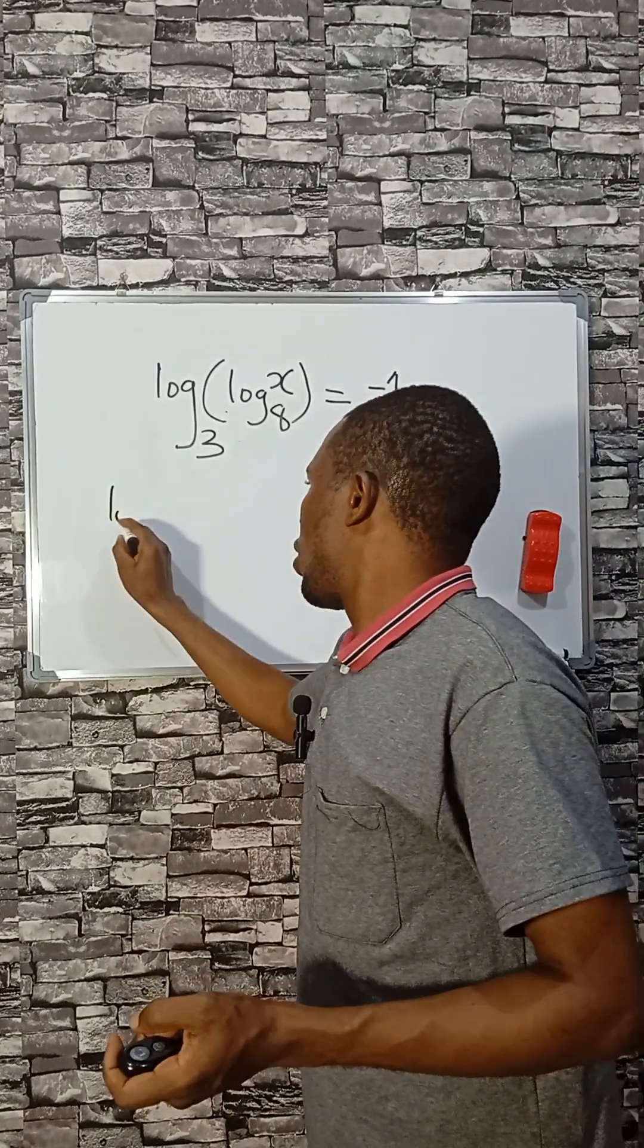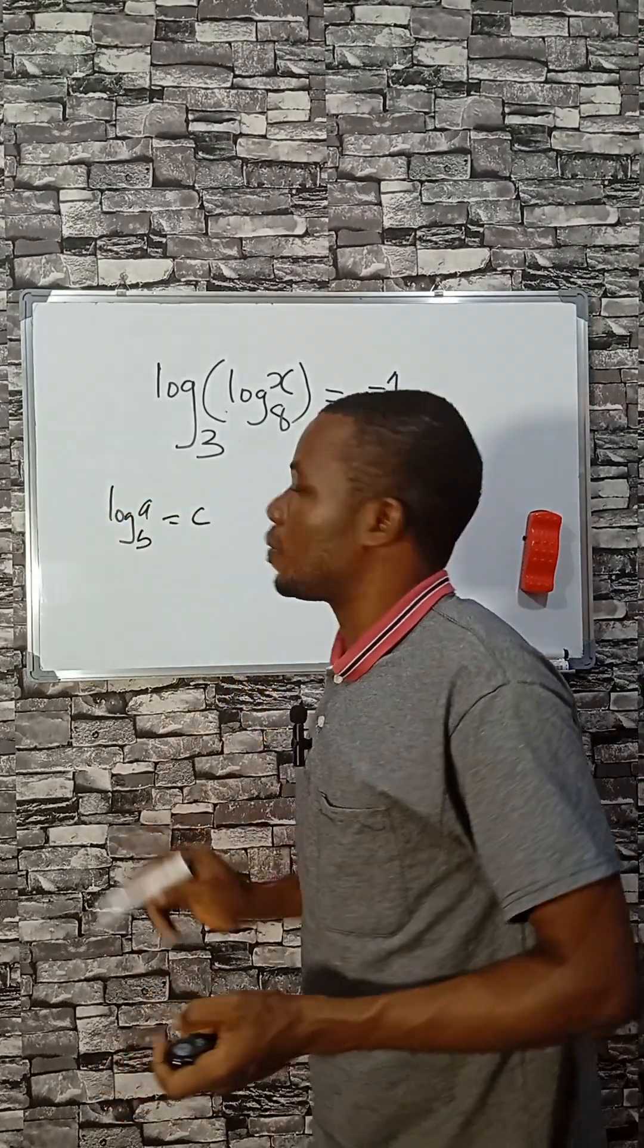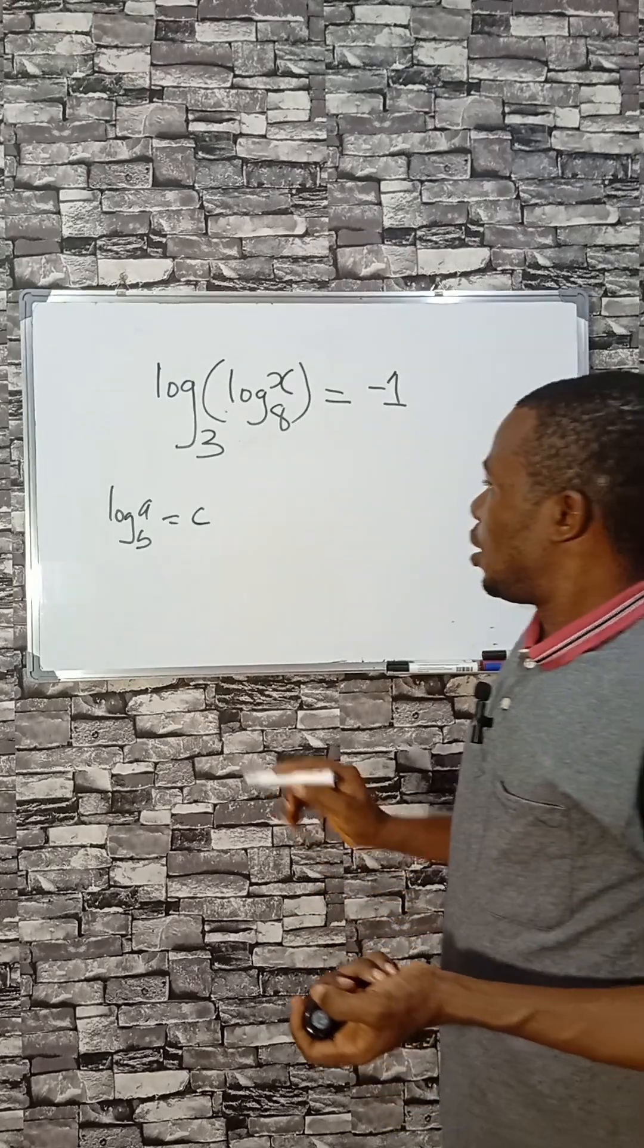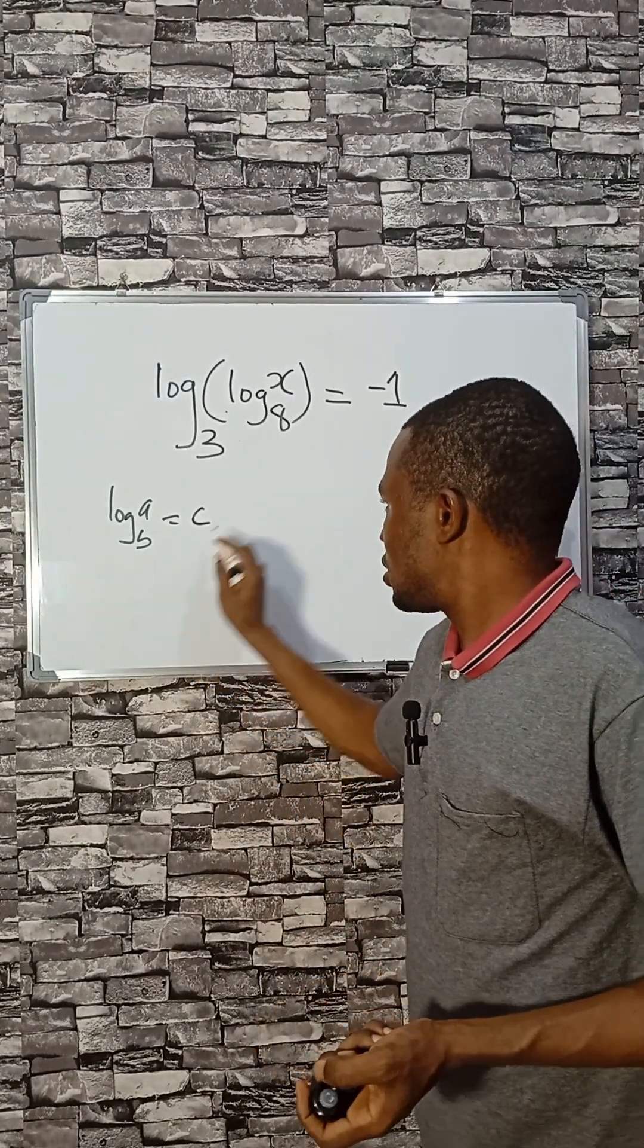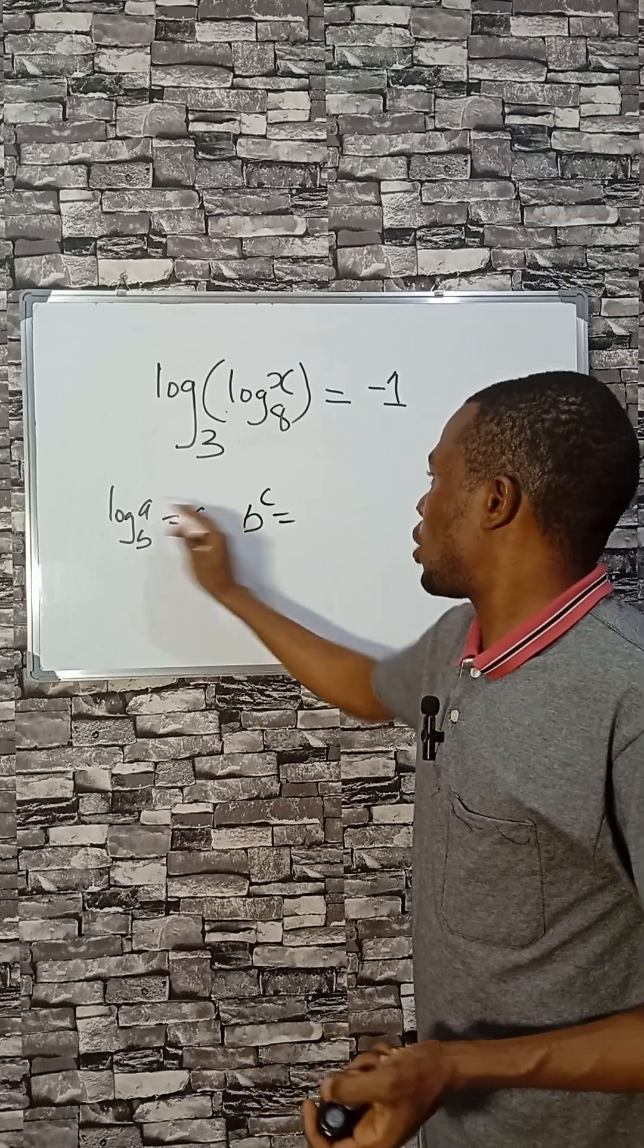So it is of the form log A base B equals C. Logarithm permits that you can do this: B raised to the power of C equals A.